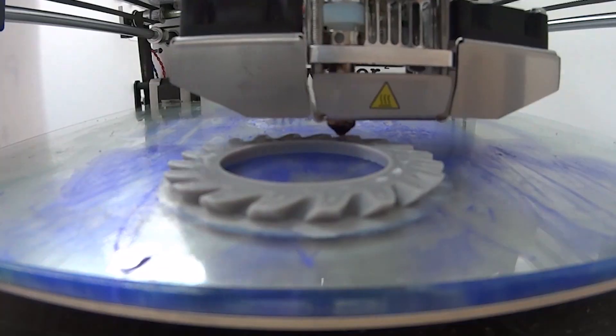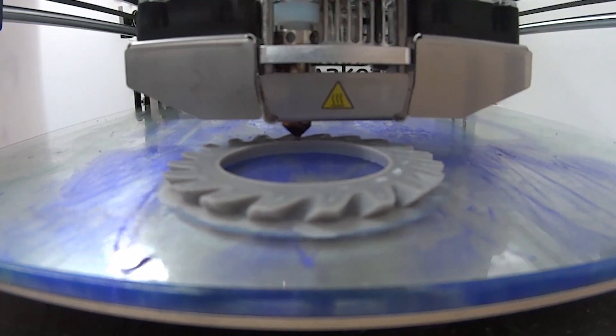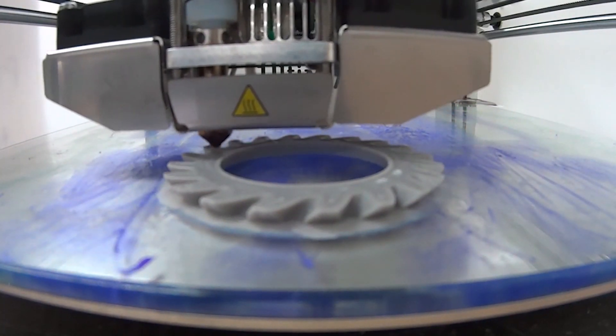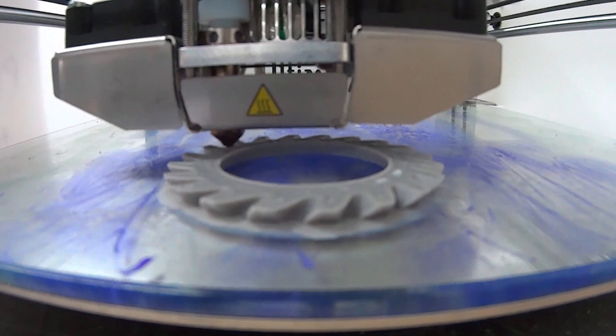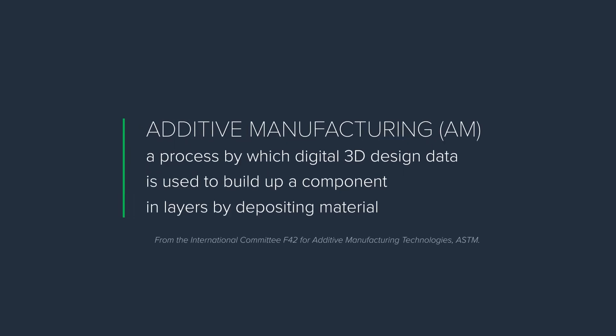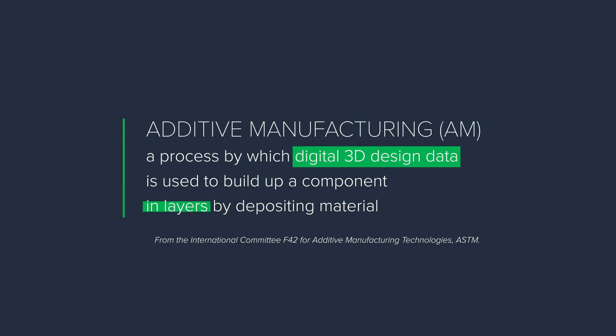So what exactly is additive manufacturing? Well, there are many different additive manufacturing processes, but perhaps the most familiar picture is that of a desktop 3D printer building an object by extruding beads of plastic layer by layer. Formally, we can define additive manufacturing as a process by which digital 3D design data is used to build up a component in layers by depositing material.